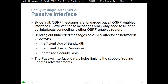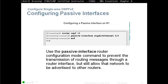Interfaces on LAN segments are not going to form neighbors, so you shouldn't be sending updates out of them. By default, OSPF messages are forwarded out of all OSPF-enabled interfaces. However, these messages only need to be sent out of interfaces connecting to other OSPF-enabled routers. Sending unneeded messages on a LAN affects the network in three ways: inefficient use of bandwidth, inefficient use of resources, and increased security risk. The passive interface feature limits the scope of routing update advertisements. To configure it, go to OSPF configuration mode — 'router ospf 10' — then 'passive-interface GigabitEthernet0/0'.